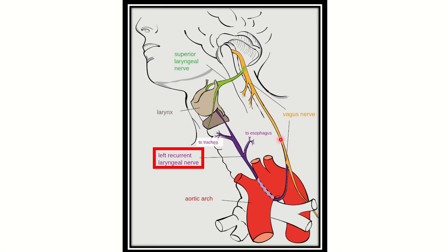Going back, we can see that the recurrent laryngeal nerve arises from the vagus nerve. Here we can see the vagus nerve and its origin — it arises from the medulla oblongata of the brain. After arising, it reaches down and gives two branches.